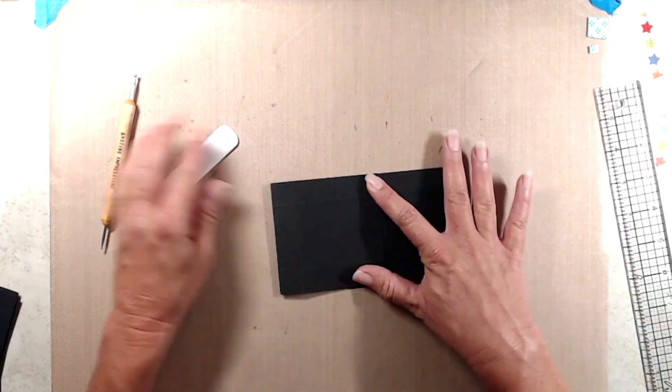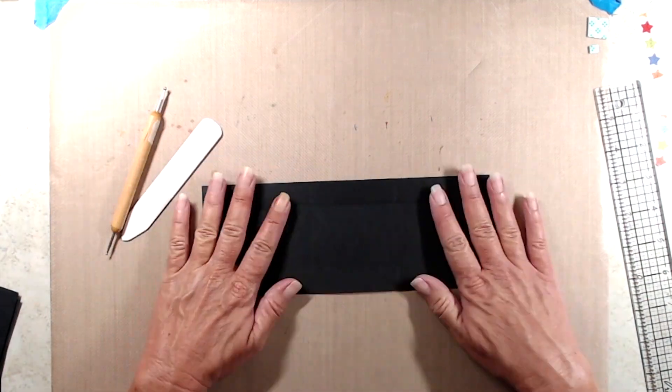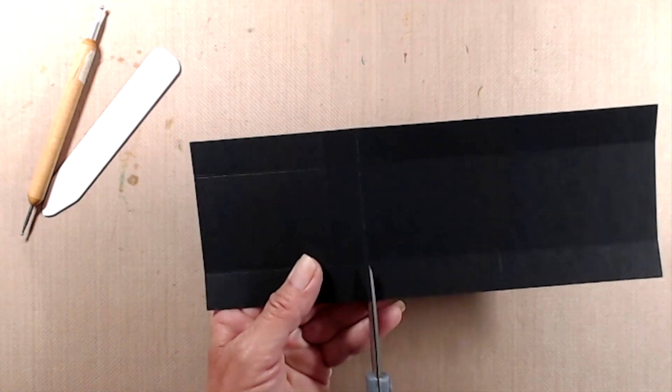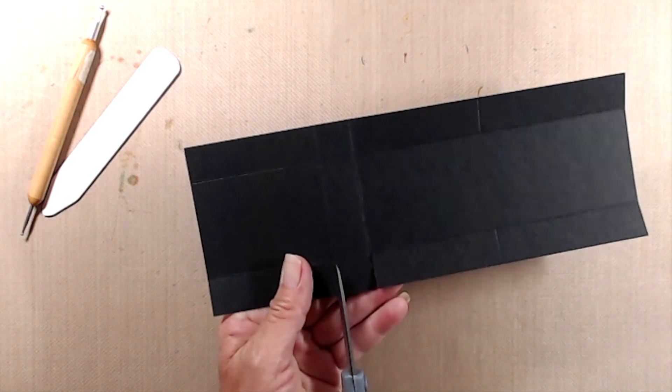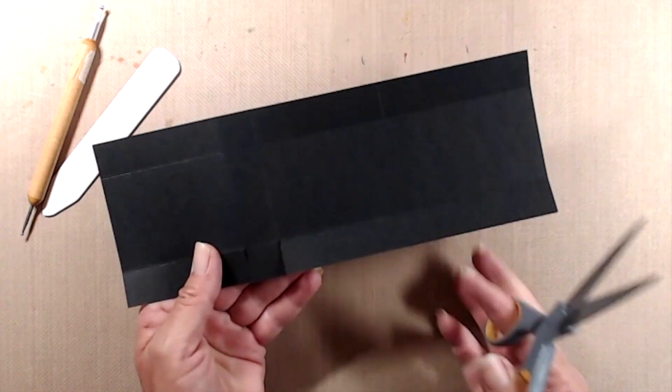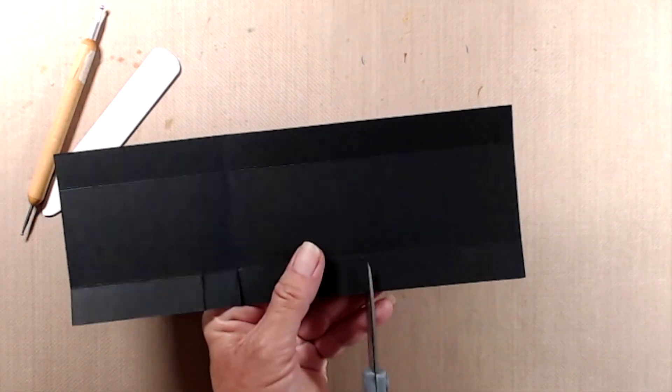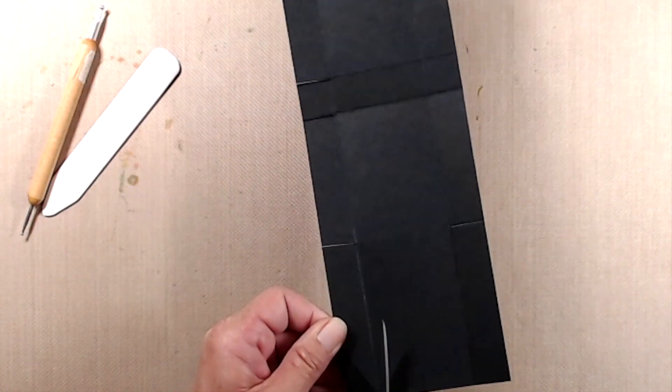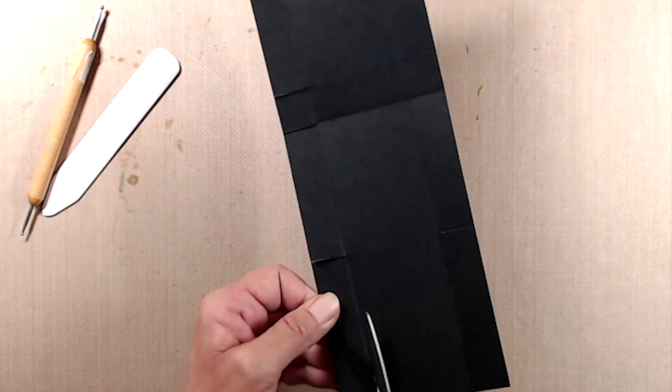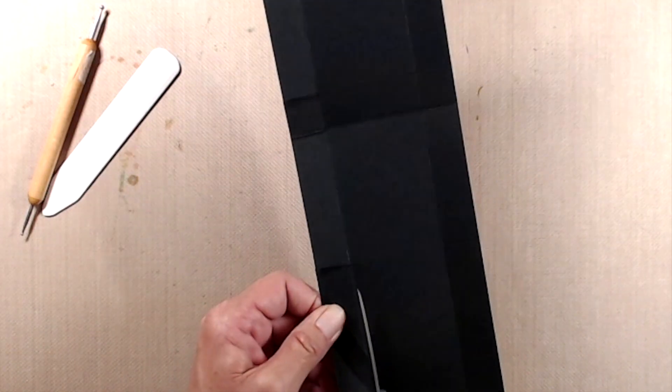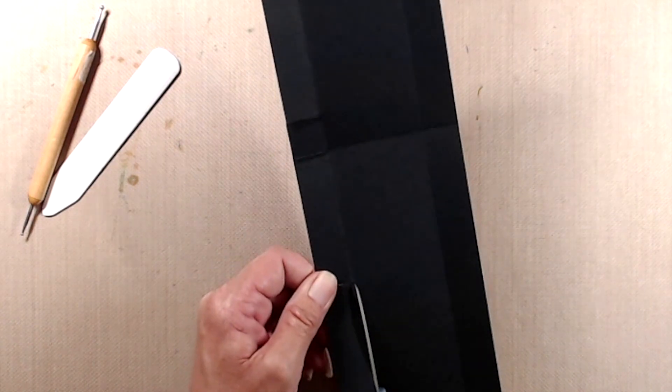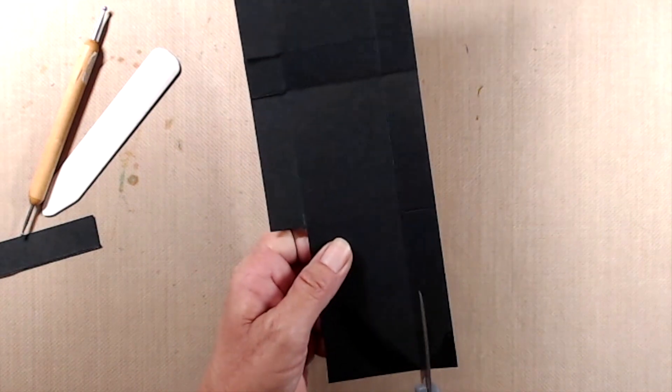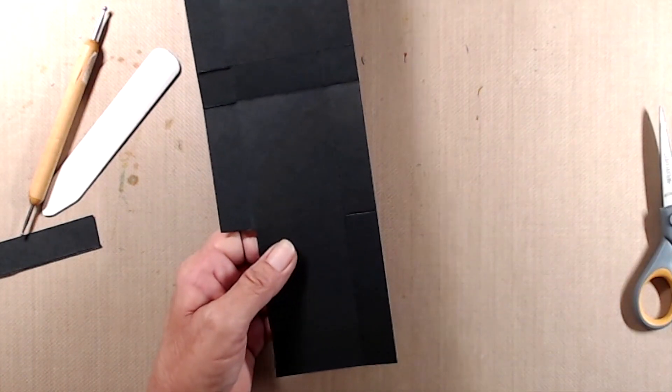Next, you're going to cut along some of these score lines to create the flaps and the top of the box. So with the cardstock horizontal, you want to cut on the short score lines up to the first perpendicular score line. And then when you get up to this part here where you only did a partial score, you're going to cut along the long score line to cut out that long skinny rectangle. We do need to remove that piece completely.